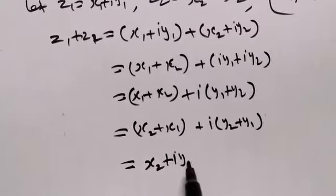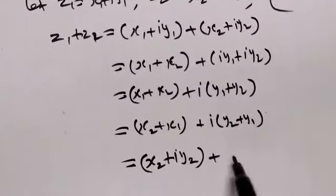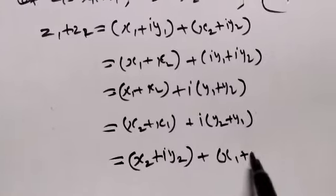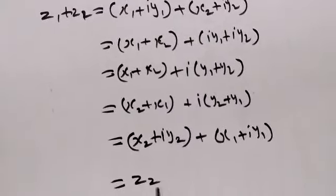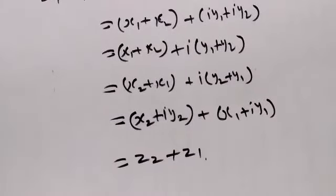Regrouping: = (x2 + iy2) + (x1 + iy1). Now x2 + iy2 is z2 and x1 + iy1 is z1.